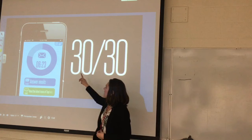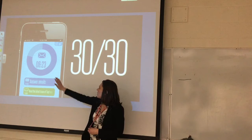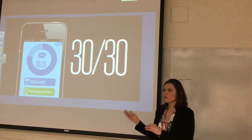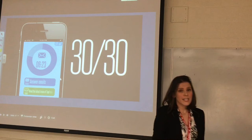Here's a picture of what the 3030 app does — it shows you the sweep of time so students know how long they've been working on something. Here are the tasks you put in, and you can edit the colors and the amount of time if you think it will take longer. It's a great app.